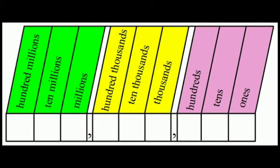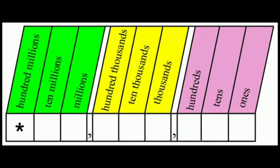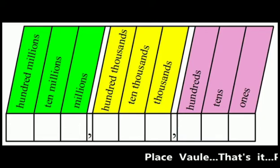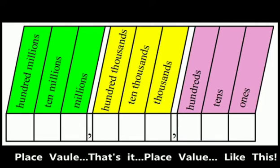Ones. Tens. Hundreds. Thousands. Ten thousands. Hundred thousands. Millions. Ten millions. Hundred millions. Place value. That's it. Place value.